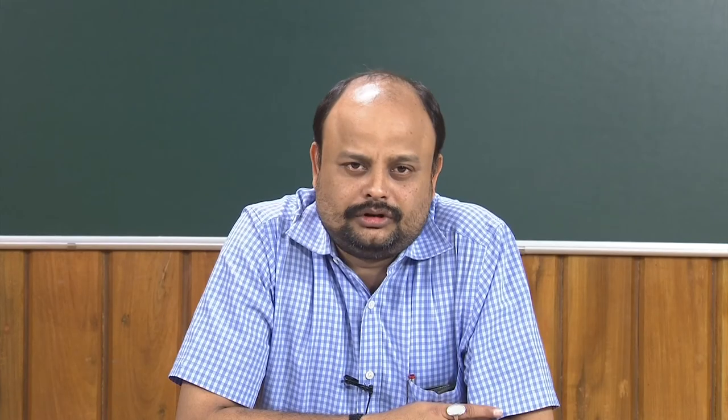In multi-phase flow, or any flow, the flow pattern is very important — it tells you about the overall behavior of the system. Like in single-phase flow, we have two types: laminar flow and turbulent flow, with a transition in between. If I know the flow is laminar, we know the velocity profile is going to be parabolic. If the flow is turbulent, it will follow u/u_max = (1/7)th power law, giving a flatter profile at the center that changes only near the wall.